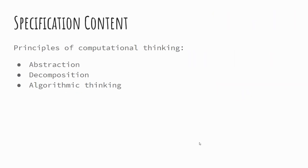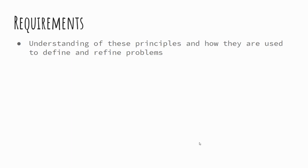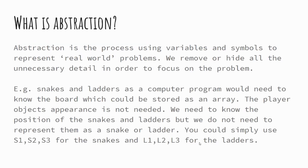So we're looking at the principles of computational thinking. The key points are abstraction, decomposition, and algorithmic thinking. For the OCR J277 specification, you just need to understand the principles of how they're used to define and refine problems.